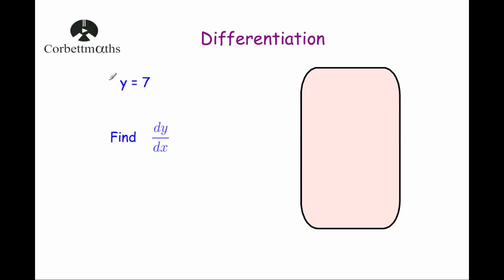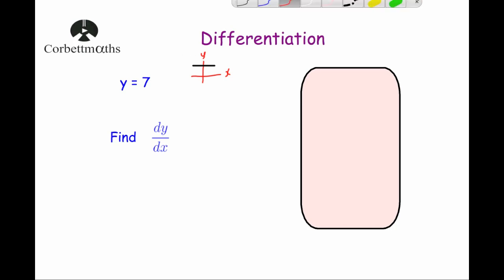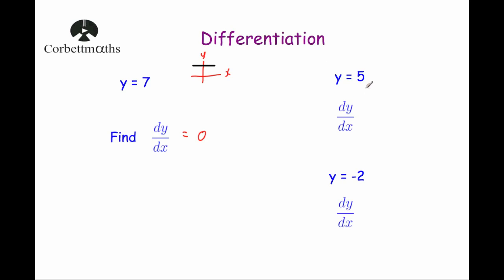Let's look at what happens when we differentiate something like y equals 7. If we sketch that, y equals 7 is just a straight horizontal line through 7 on the y-axis. It has a gradient of 0, because the height is not changing. So dy by dx equals 0. If there's just a number or a constant, when you differentiate it you always get 0. So dy by dx of y equals 5 is 0, and dy by dx of y equals minus 2 is also 0.